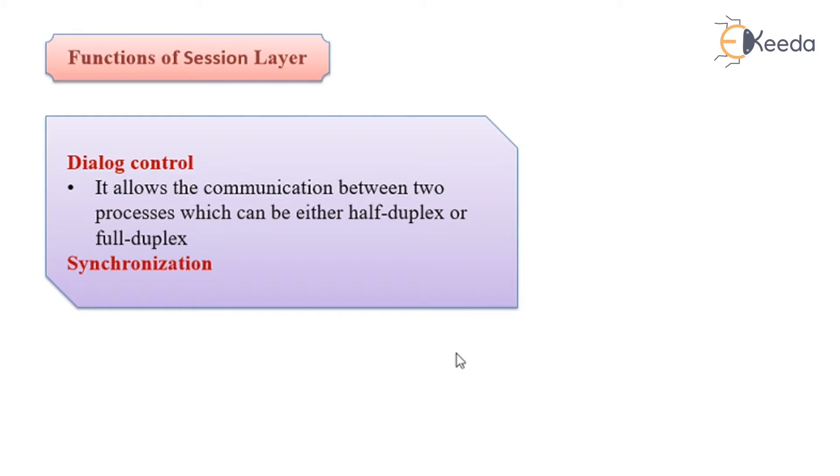Functions of session layer. Dialog control and synchronization between devices or sender and receiver is the function of the session layer. It allows the communication between two processes which can be either half-duplex or full-duplex. That means the communication can take place between two devices at the same time or one after the other. The synchronization is being taken care of by the session layer.